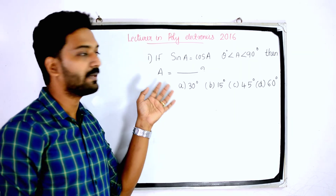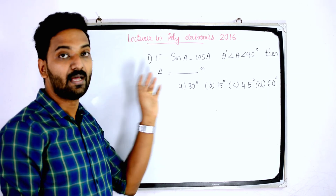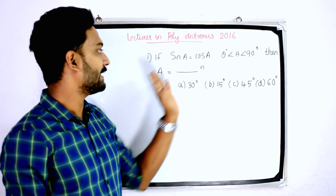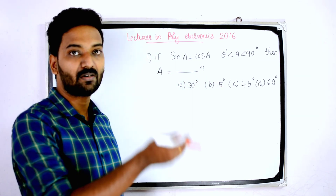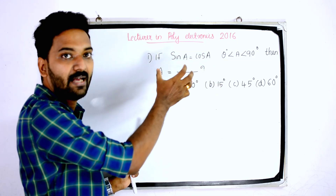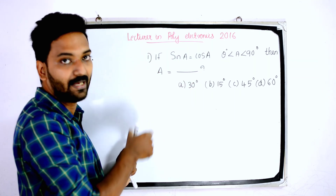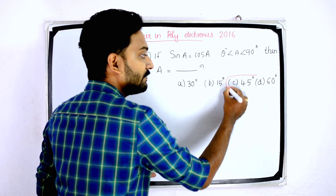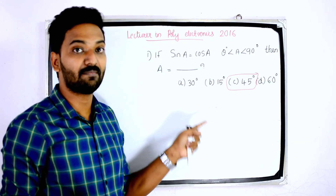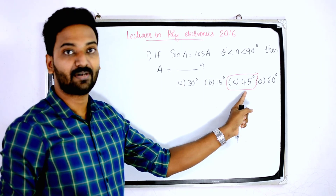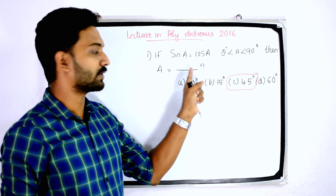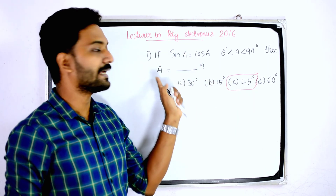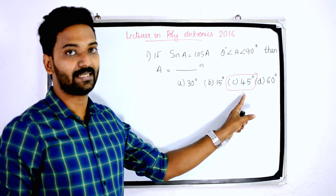If sin a equals cos a, where 0° < a < 90°, then a equals what? If we look at the trigonometry table, sin a and cos a have the same value at 45°. So the answer is a = 45°.